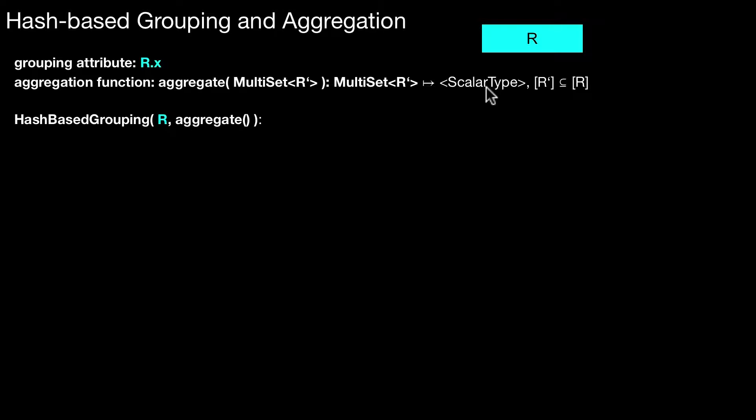In hash-based grouping, we use as input R and the aggregation function. Again, no materialization required here. This doesn't mean that we actually copy relation R to memory or to any level of the storage hierarchy. This just means there's a way to stream it to the implementation of this function. Then, what we do is initialize an empty hash-map called hm. We initialize a handle to a list called group that contains the list of tuples that belong to a specific group. We will see how that works in a moment.